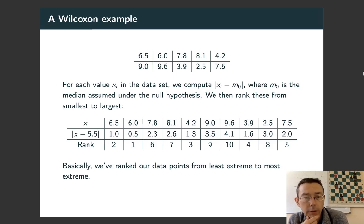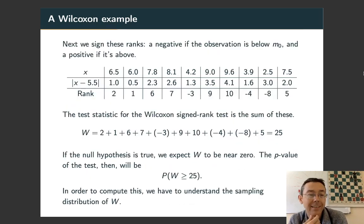So, what we're going to do is we're going to take each of the values in our data set and compute how far away it is from the hypothesized median. So, the absolute value of Xi minus M0. Then we're going to put these in order. So, we're assigning each of these 10 values a number between 1 and 10, basically. After that, we're going to sign the ranks. So, if you have a value in the data set that's below the median, you're going to make the rank negative. If you have a value that's above the median, then we're going to keep it positive. So, now what we have is the numbers from 1 to 10 that are all plus or minus. We're going to add all of those up and that's going to be our test statistic. W equals that whole sum equals 25.